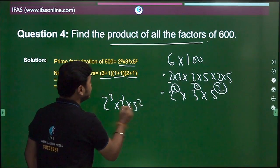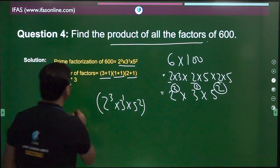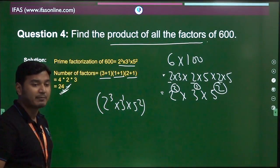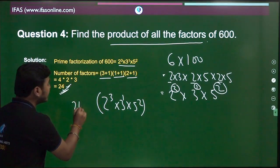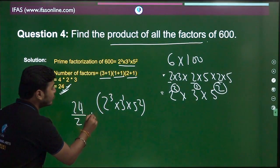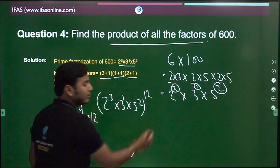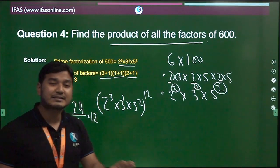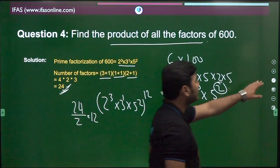After writing this, what you do is take the number of factors that you got, divide it by 2, you get 12. Write 12 here as the exponent. And that's it, students! You will get the answer correctly.